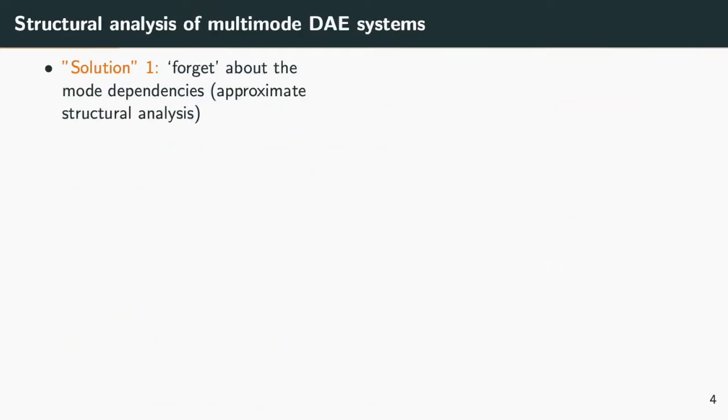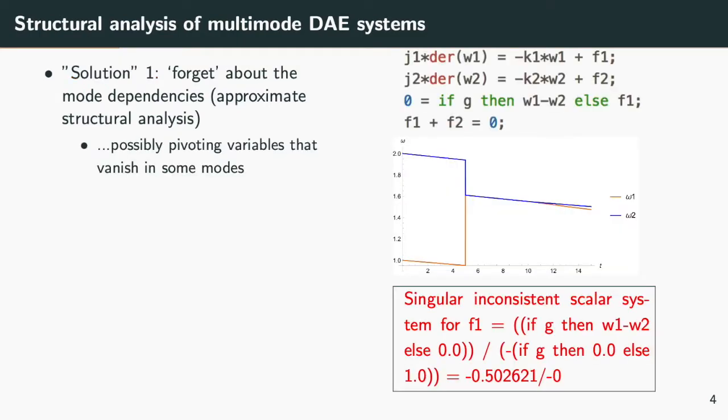What can we find in the literature and in existing tools about the structural analysis of multimode DAE systems? The first approach is to ignore the fact that the structure depends on the mode of the system, and to perform a classic structural analysis. This is what is implemented in all the Modelica tools we had the opportunity to test. This works when the structure is independent of the mode, and may give erroneous results when this is not the case.